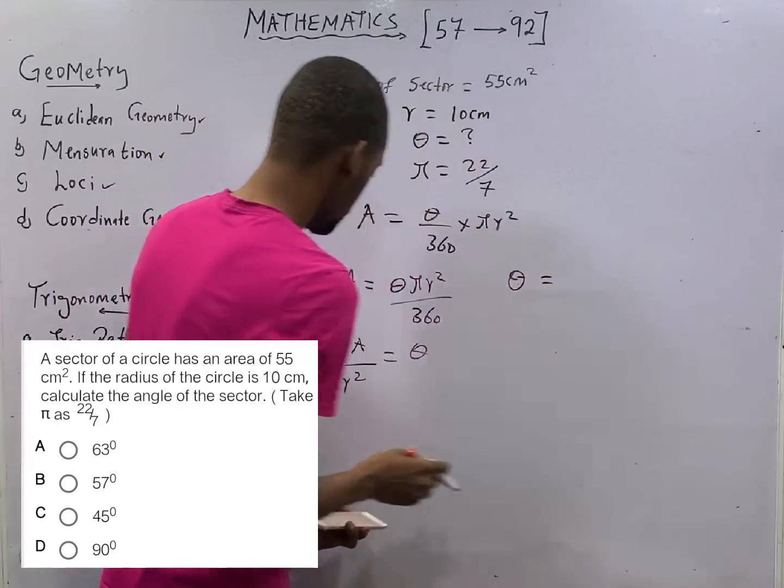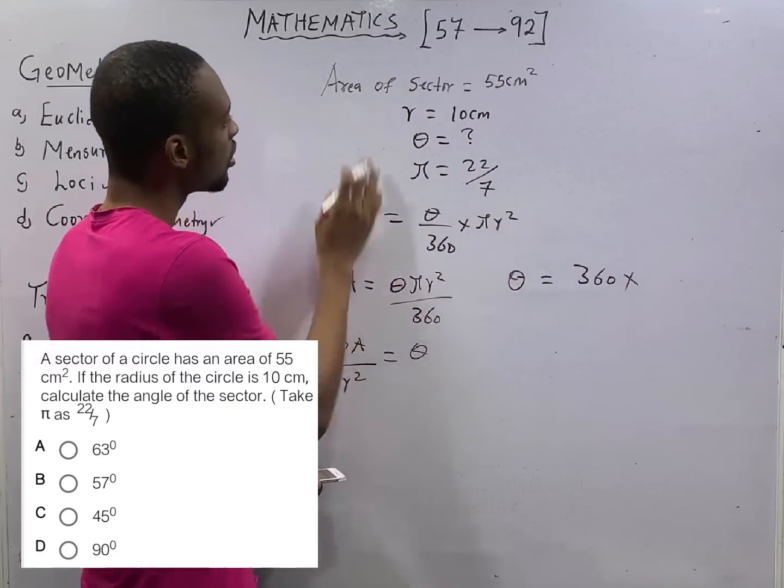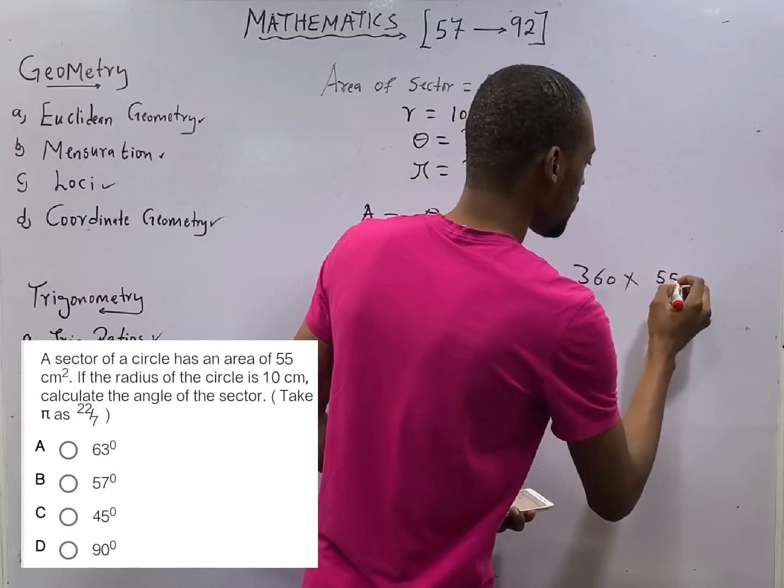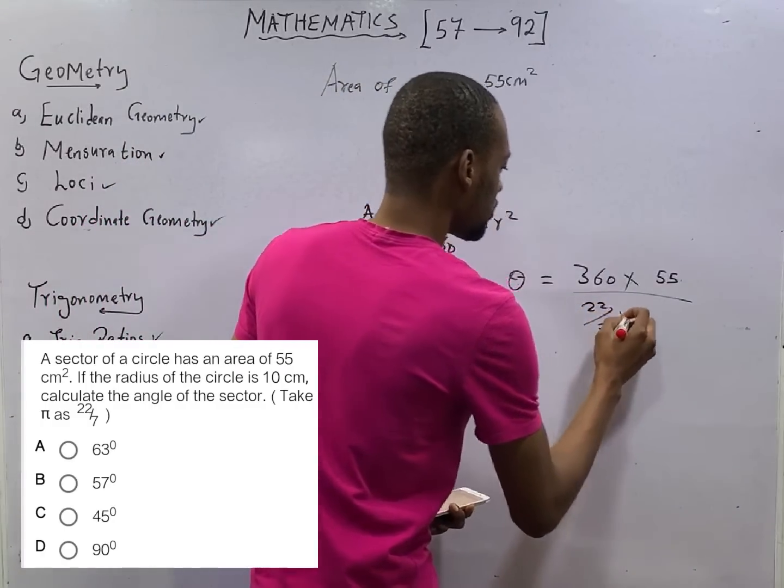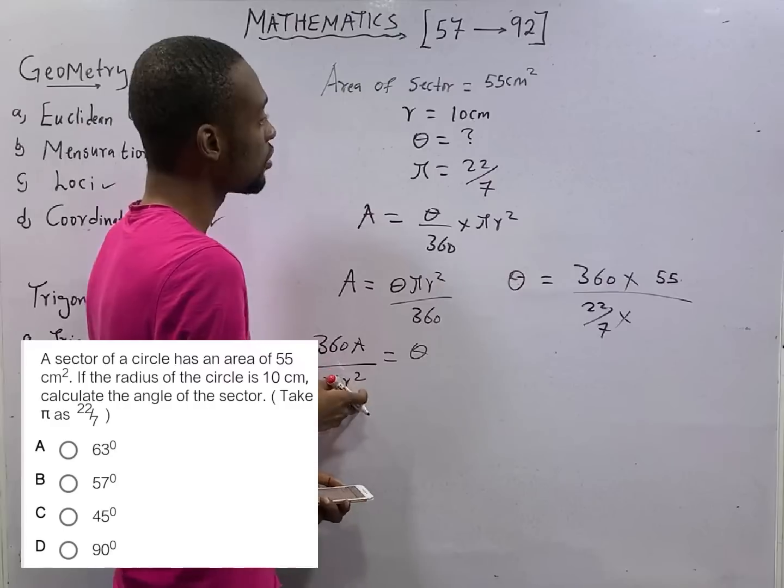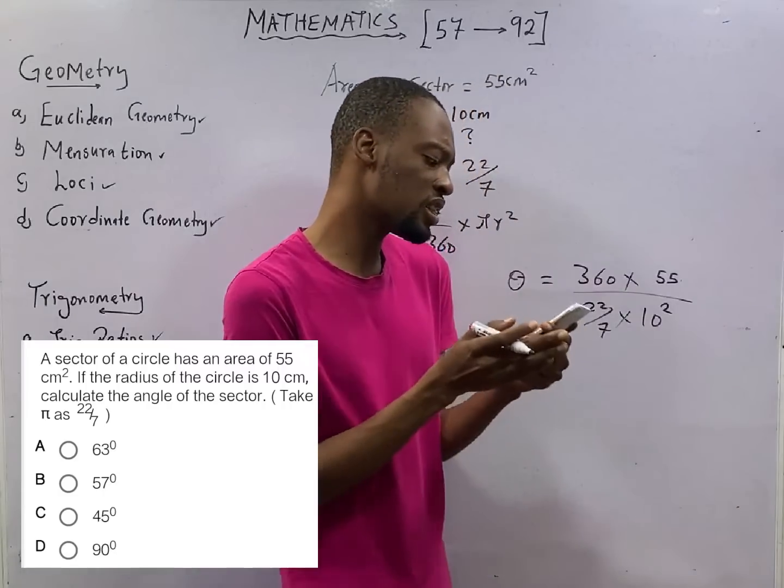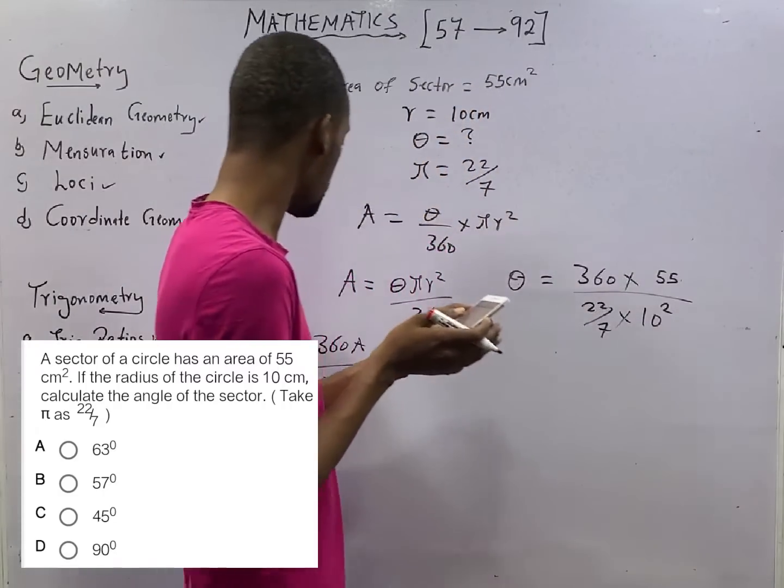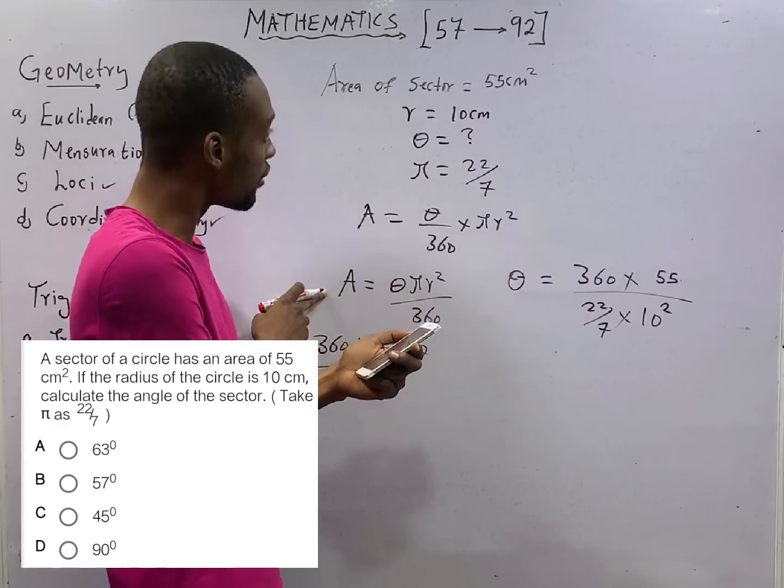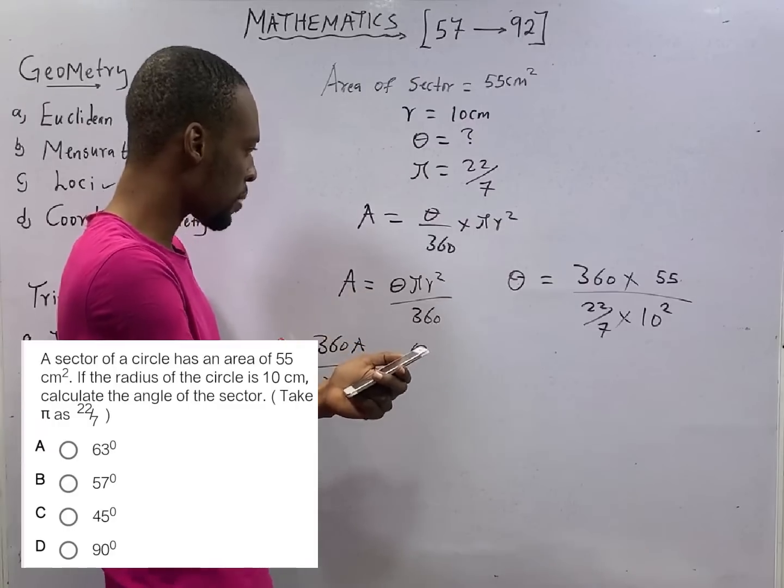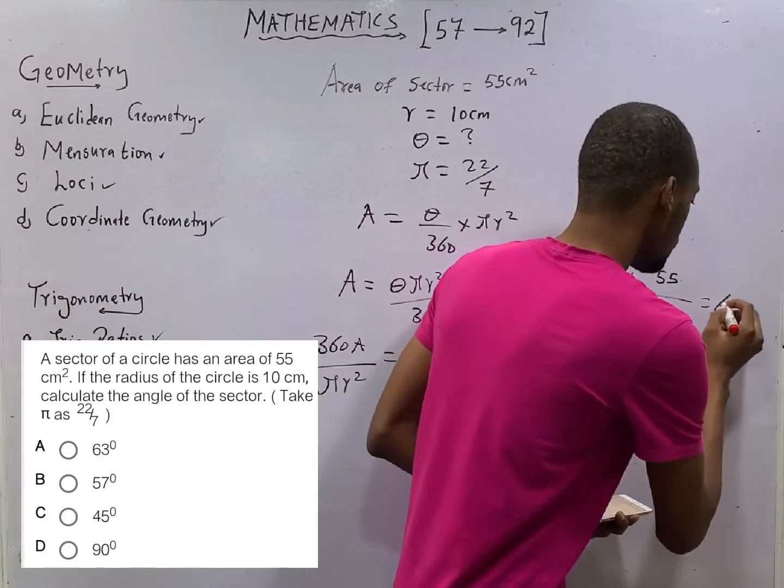From here I think food is ready. Theta becomes 360 times A. Area is 55. 55 over pi, 22 over 7 times 10 squared. That should give you 63 degrees.